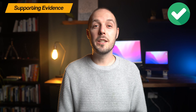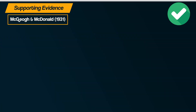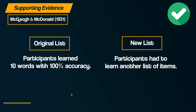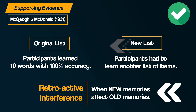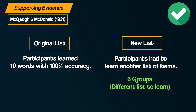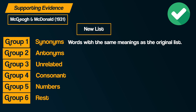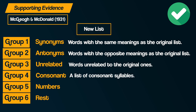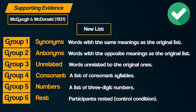Let's consider some of the research into interference. Firstly, there is laboratory research by McGeoch and McDonald in 1931. Participants were given 10 words to learn and practiced remembering the list until they could recall them with 100% accuracy. They then learned a new list — notice that this is testing retroactive interference, to see if the more recent information would interfere with the first old list. There were six groups in the study, each with a different list to learn varying in similarity to the original. Group 1 had synonyms, Group 2 had antonyms, Group 3 had unrelated words, Group 4 had consonant syllables, Group 5 had a three-digit number list, and Group 6 were given no new list at all — they were the control condition.